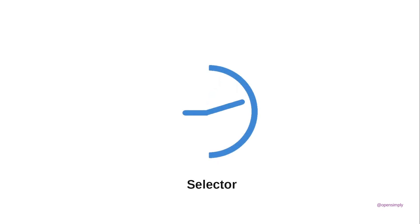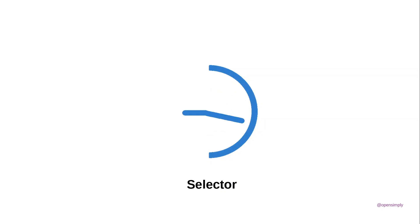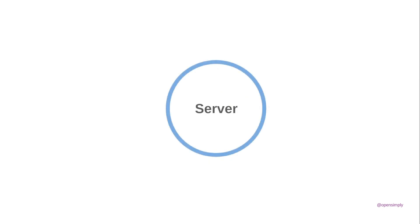For the object which searches for a free server in accordance with some rule, the term 'selector' is used. For the MMC queuing system, this rule can only affect the server's utilization. For a call center agent or any other similar service object, the term 'server' is used.